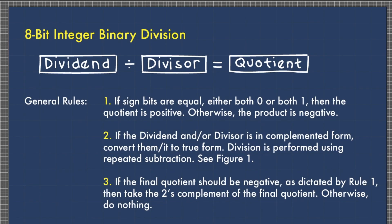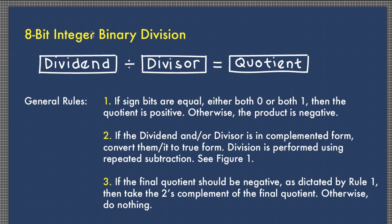When you perform division, the number that is being divided is called the dividend, and the number that divides the dividend is called the divisor. The result of this division is called the quotient.